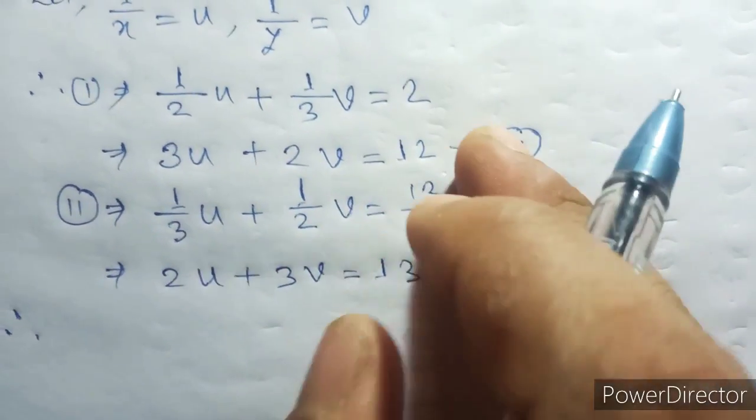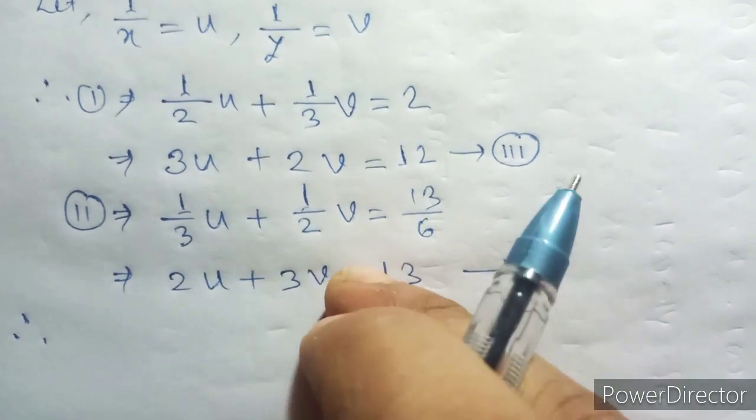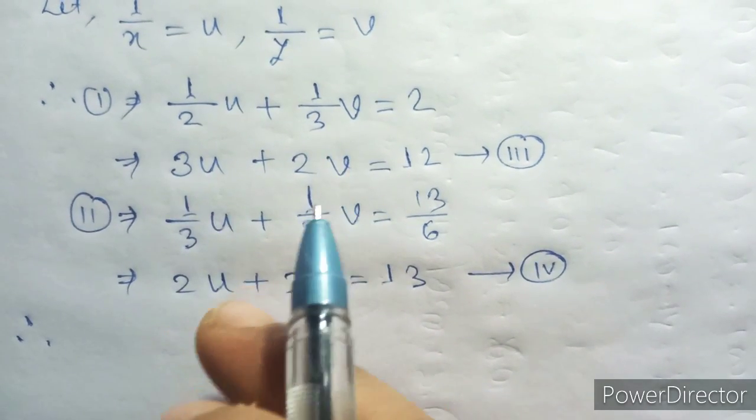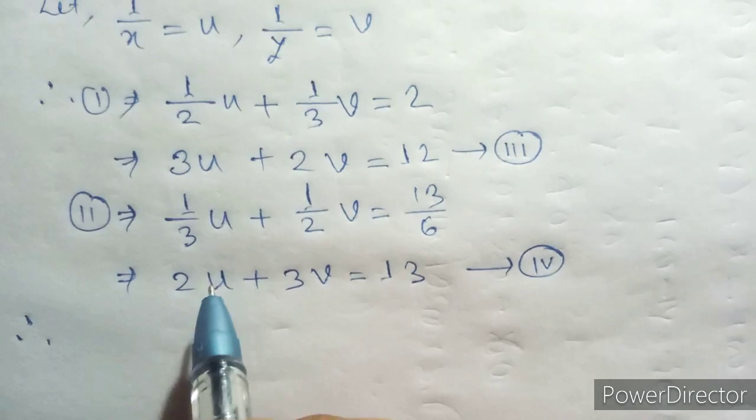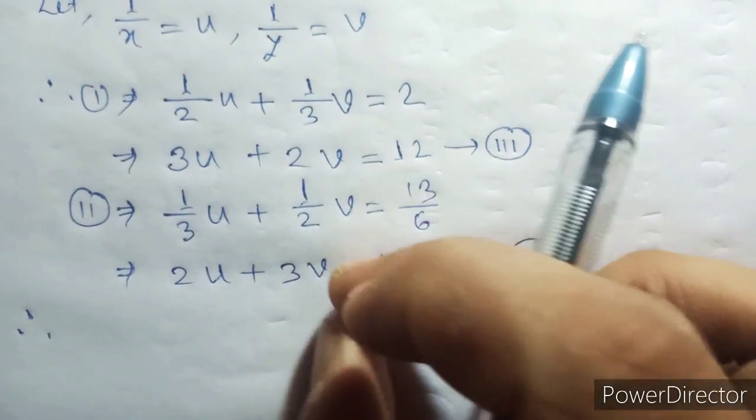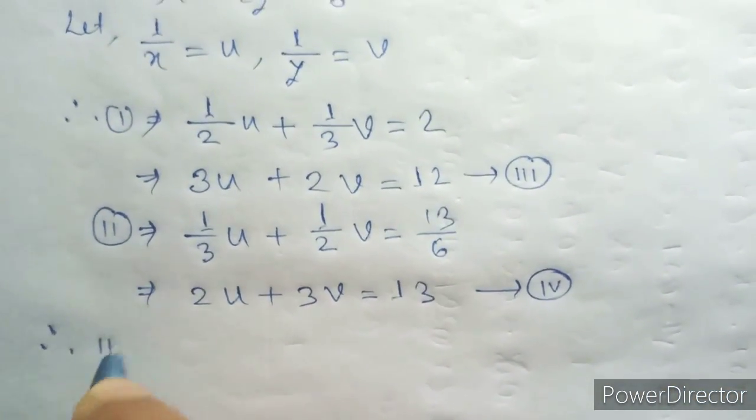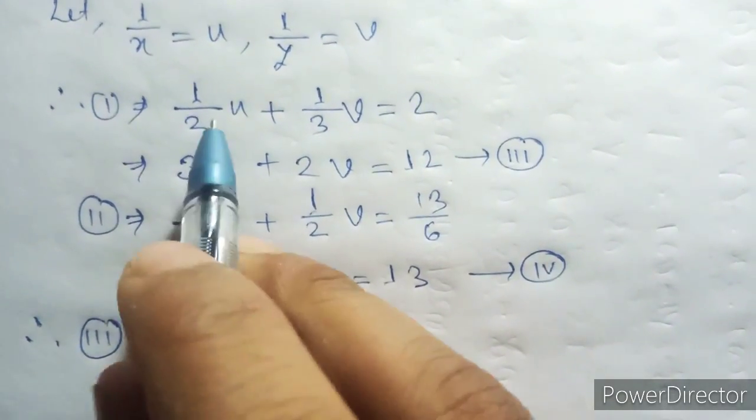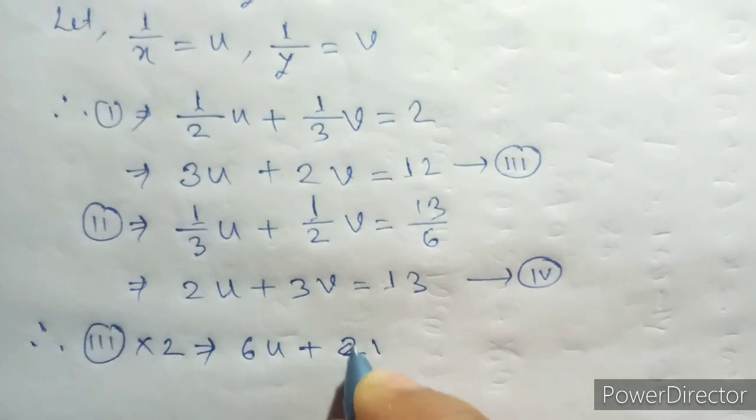I'll multiply equation 3 by 2, so 3 into 2 gives 6 U plus 4 V. I'll also multiply by 2 on the other side to get 6 U, and the 6s cancel out.